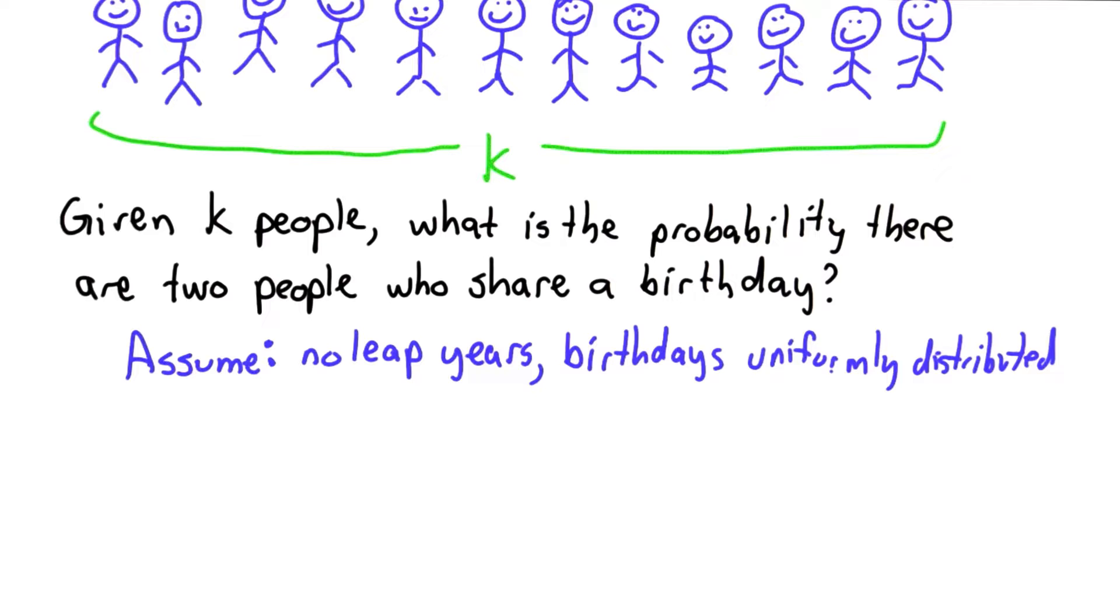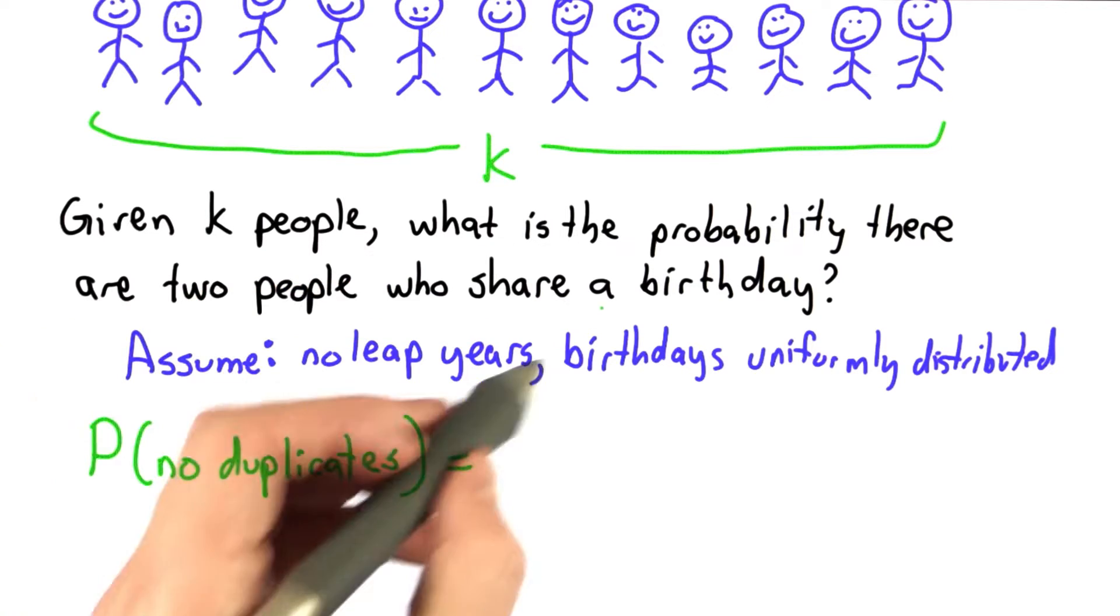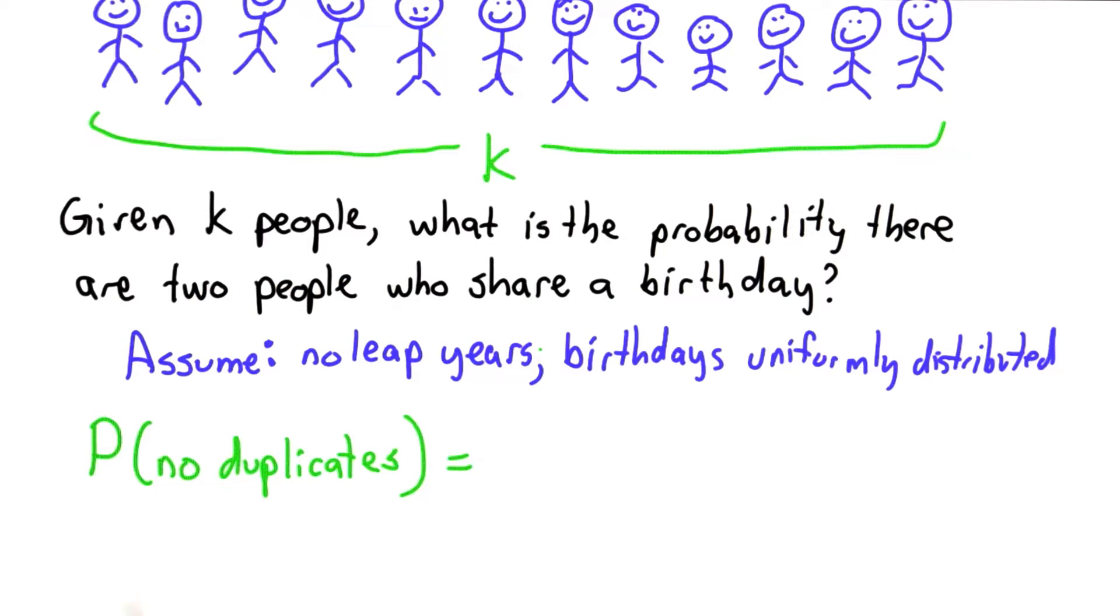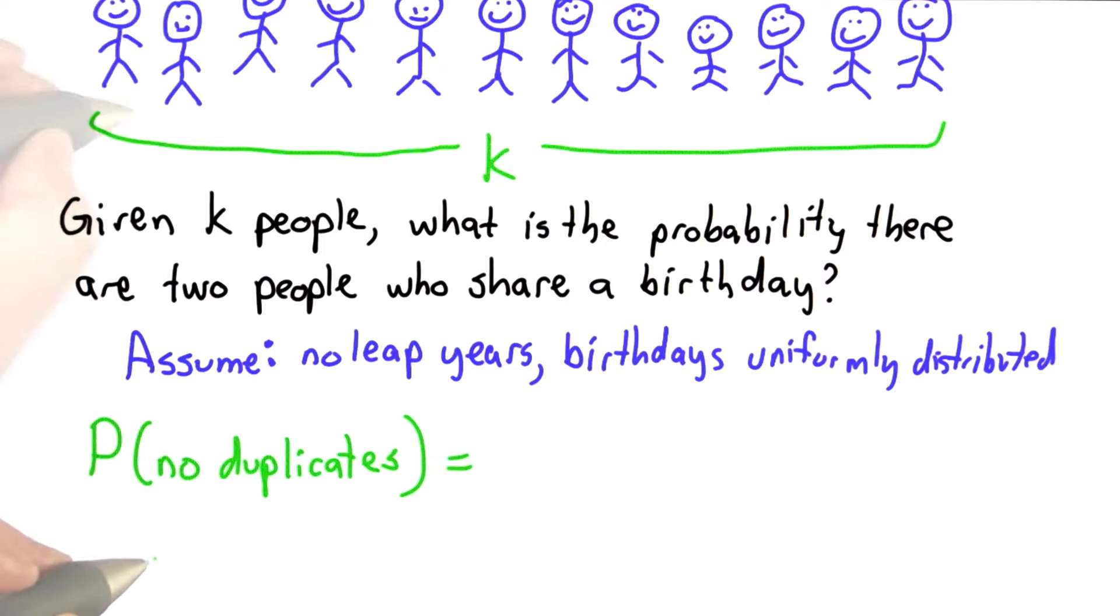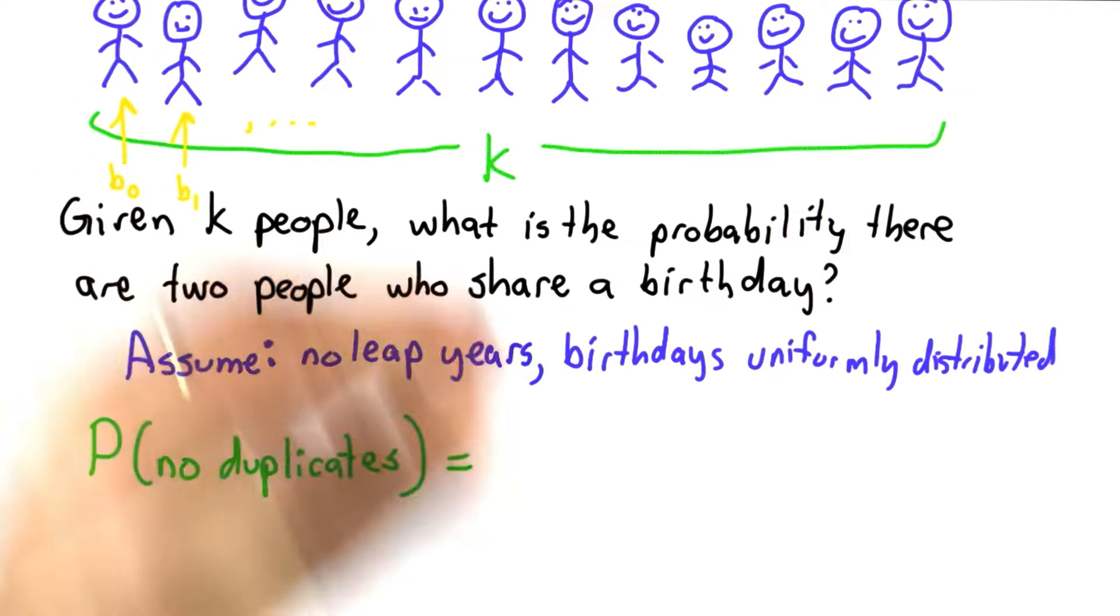We assume the same property for our outputs of our ideal hash function. We'll compute the complement probability that there are no duplicates, and then the probability that there is at least one duplicate is 1 minus this. The way to think about that is we can go through the people in the class. We can assign some birthday to each one. We'll assign b0 to the first one, b1 to the second one, keep assigning birthdays.